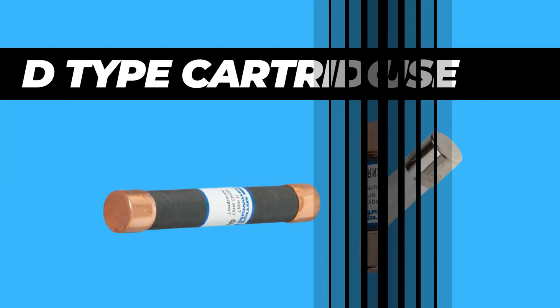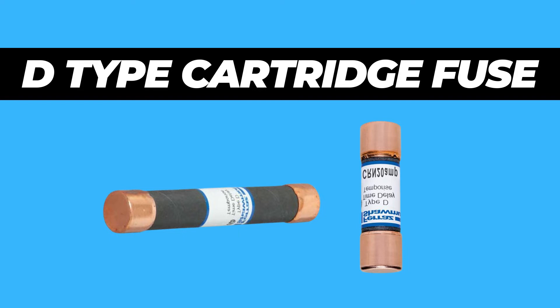B type fuses are the basic construction types of cartridge fuses that feature a base, adapter ring, cartridge, and fuse cap.